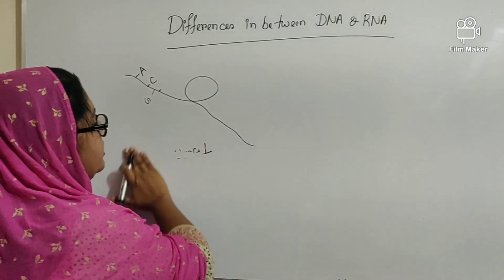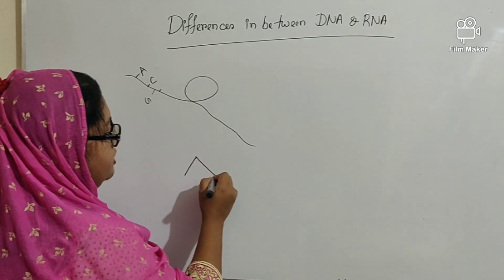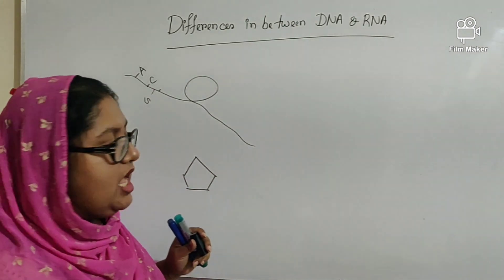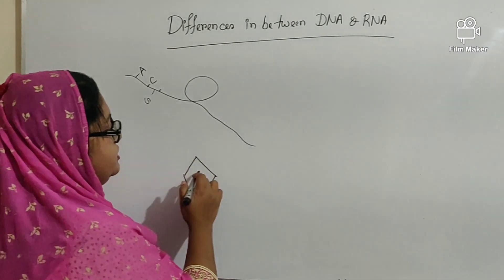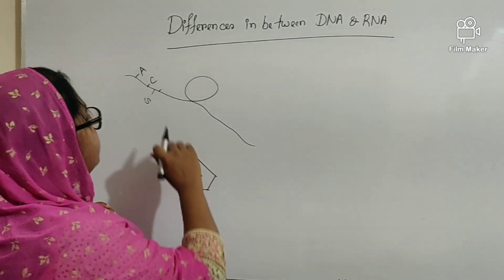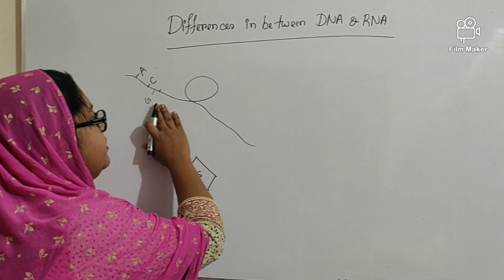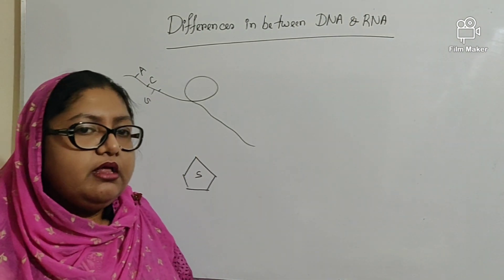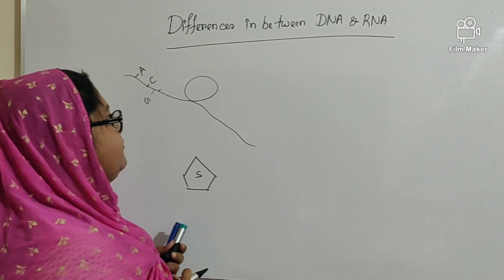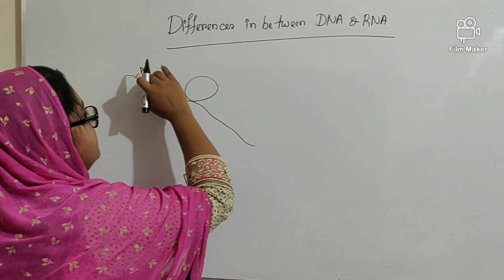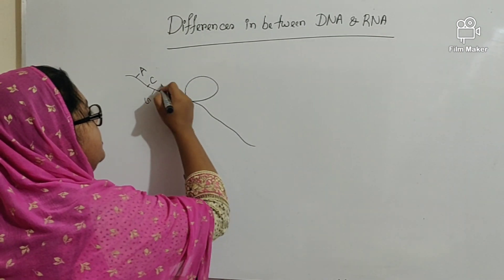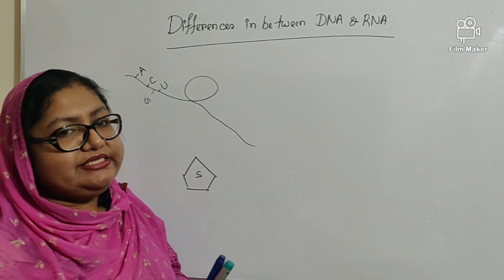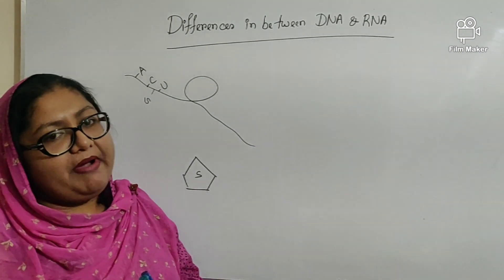All the structure of nucleotides remains the same, except the sugar. In the case of DNA, that was deoxyribosugar. In the case of RNA, the sugar is known as ribosugar. In the case of DNA, the nitrogen bases are adenine, guanine, cytosine, and thymine. But in the case of RNA, the nitrogen bases are adenine, cytosine, guanine, and uracil. Here, adenine and guanine are known as purine, and cytosine and uracil are known as pyrimidine.